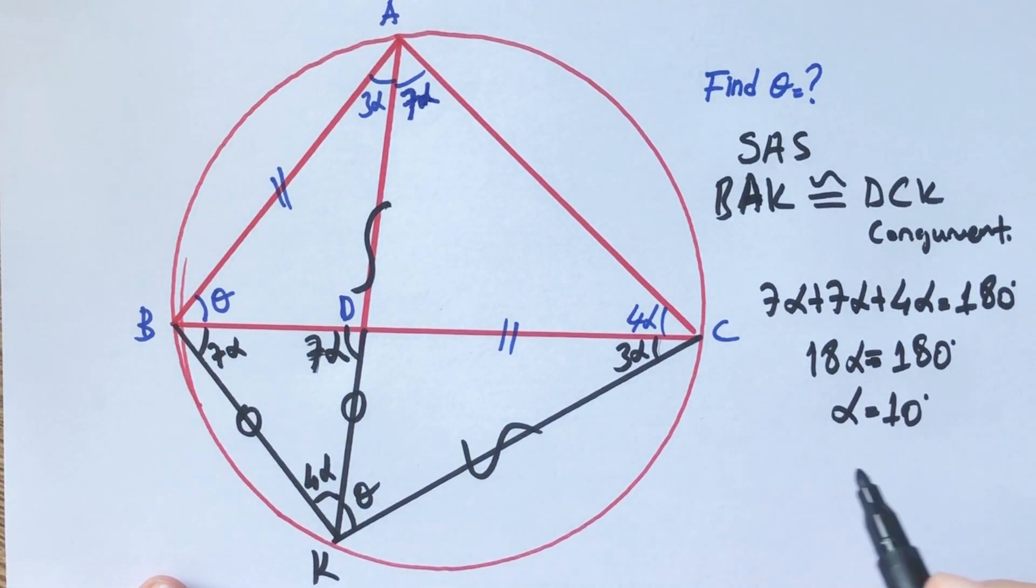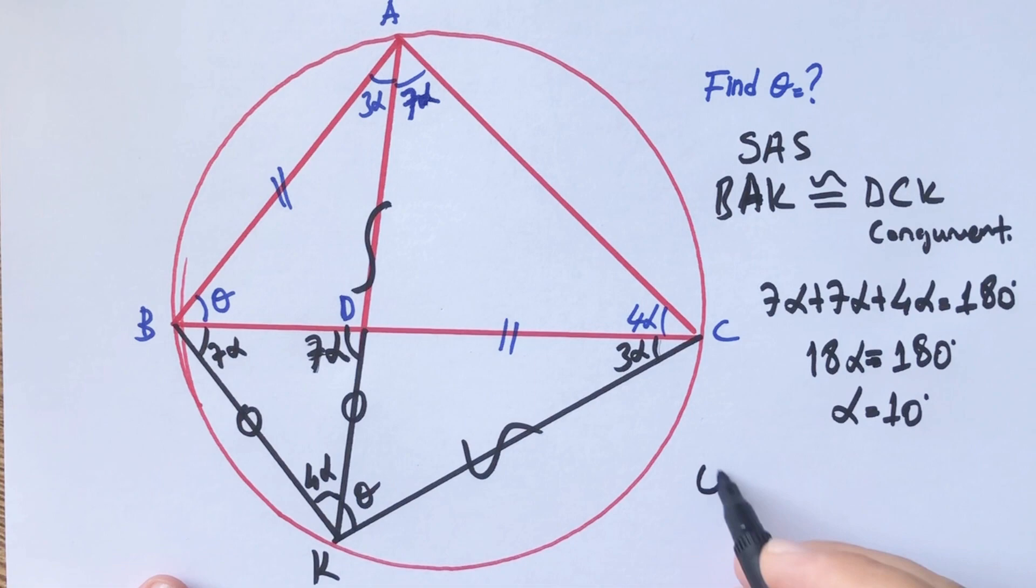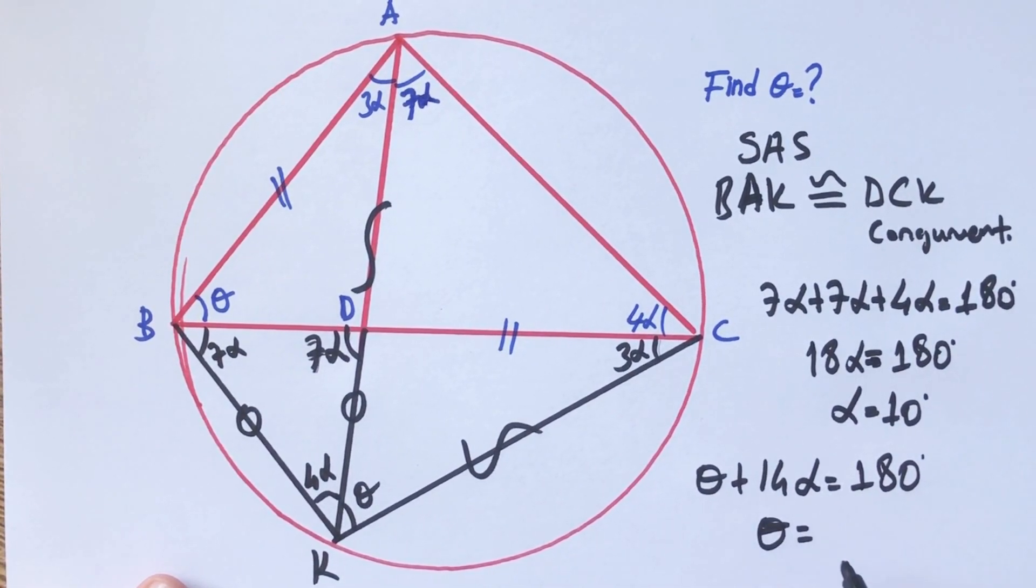But theta is asked. So theta plus 14 alpha equals 180 degrees. Therefore, theta equal 40 degrees.